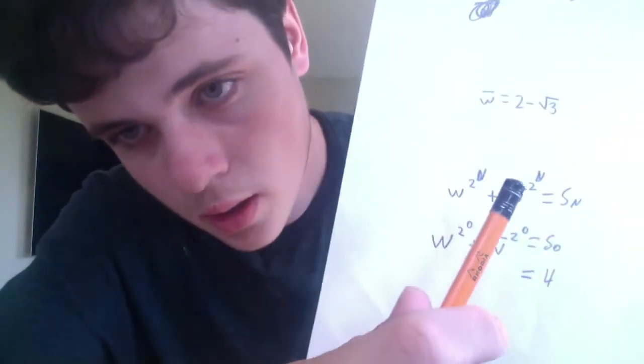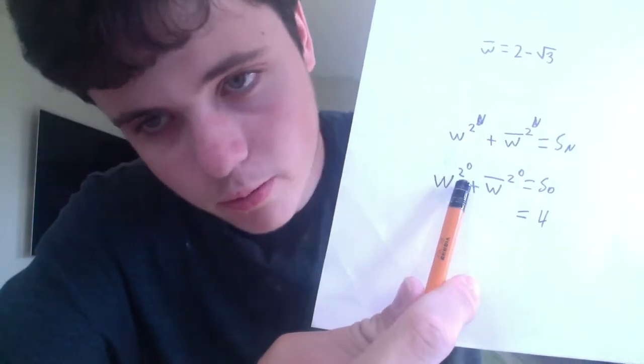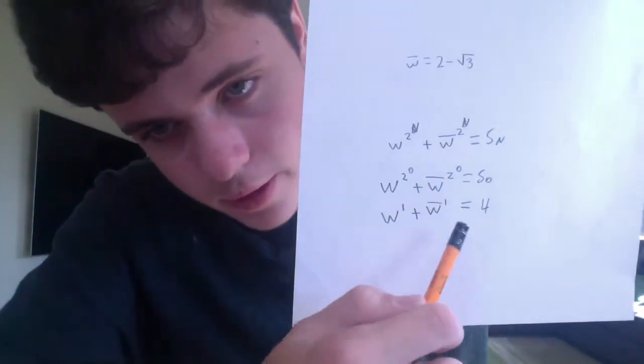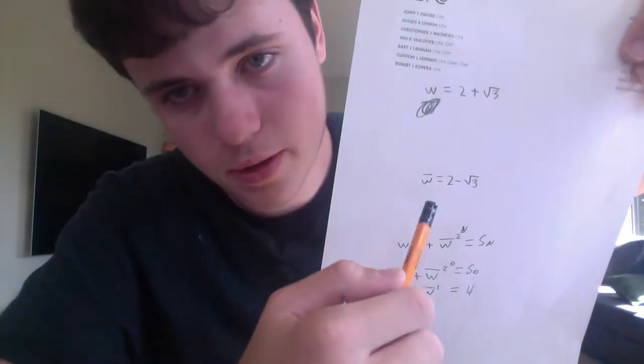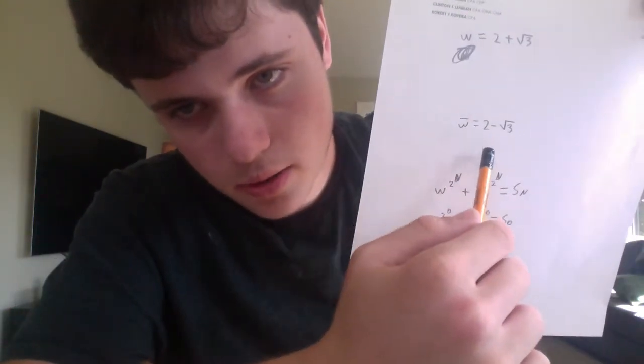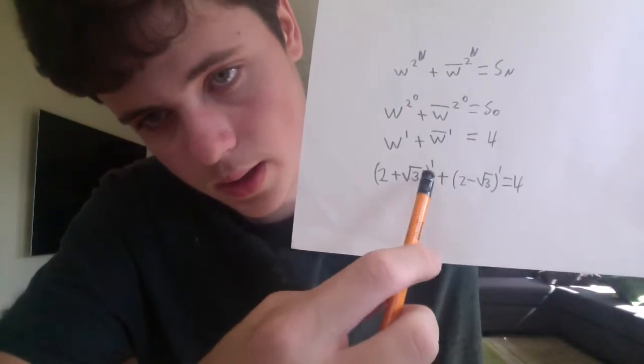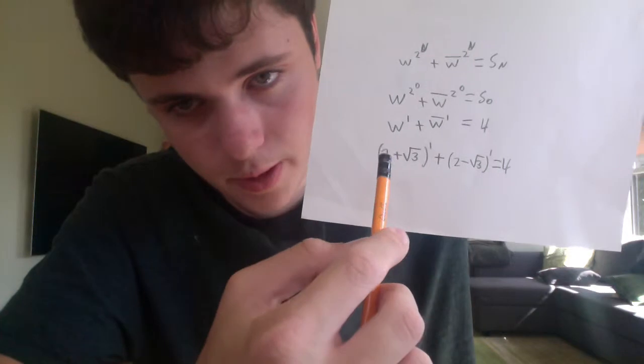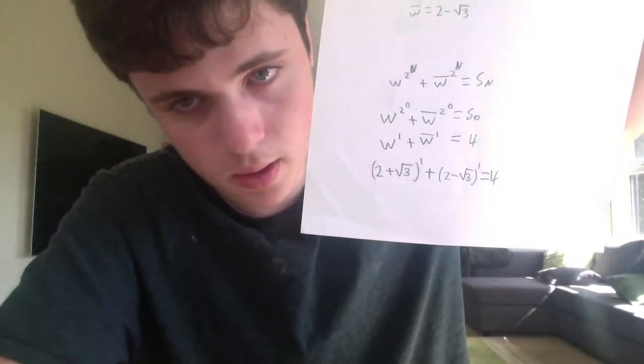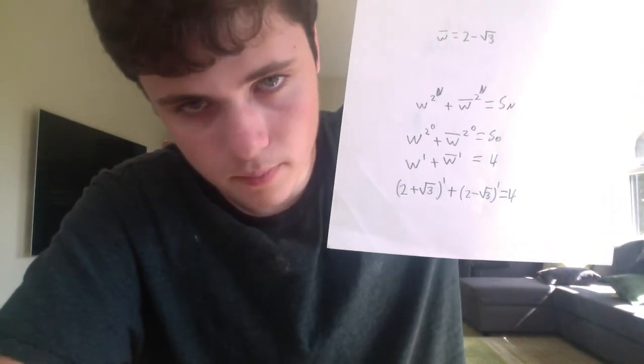2 to the power of 0 is 1, so we have W to the power of 1 plus W-bar to the power of 1. Substituting in W = 2 plus the square root of 3 and W-bar = 2 minus the square root of 3, anything to the power of 1 is itself, so this becomes (2 + √3) + (2 − √3). The square root of 3 terms cancel, leaving 2 + 2 = 4. Therefore, we have proved our formula for n equal to 0.